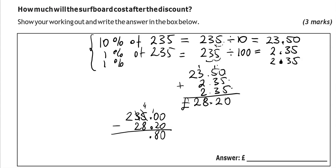You have to borrow 1 from this. So it becomes a 2 and this becomes 14. So 14 - 8 gives us 6. 2 - 2 is 0. 2 - 0 is 2. So £206.80 is the new price. That's the discount.